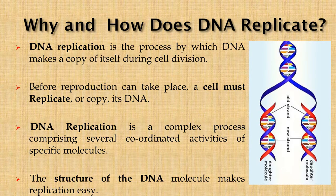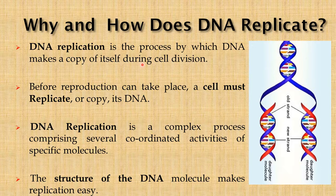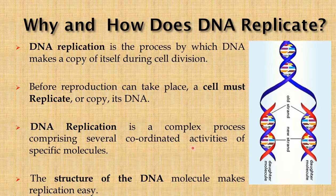With this background in mind, let us now ask a very significant question: why and how does DNA replicate? DNA replication is a process by which DNA makes a copy of itself during cell division. When a cell reproduces it needs to pass all this genetic information onto the new cells. Before reproduction can take place, the cell must replicate or copy its DNA. DNA replication is a complex process comprising several coordinated activities of specific enzymes, and most importantly the structure of the DNA molecule makes replication easy.